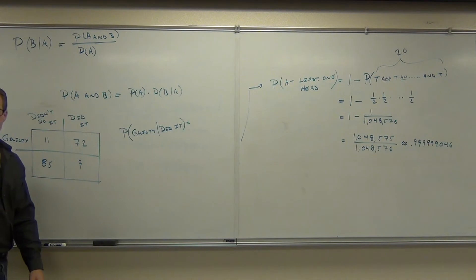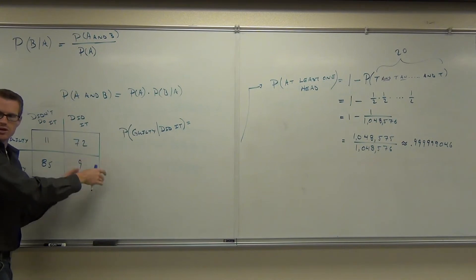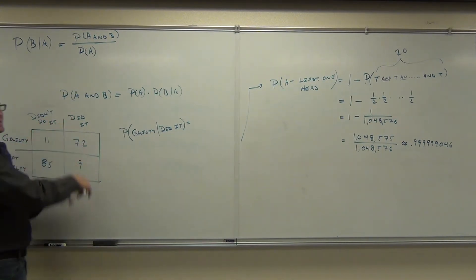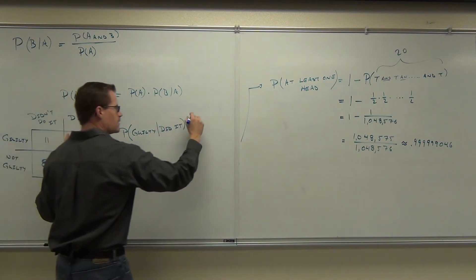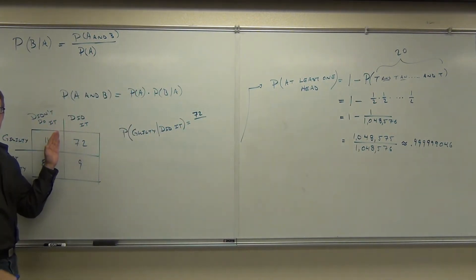What this does to our table, notice, if you already know they did it, are you even going to care about these people? If you already know they did it, this is where you're looking. Do you care about this study? If you know they did it already, you're only looking at this column. How many people are guilty in this column? How many total people are in this column? Where'd you get 81?